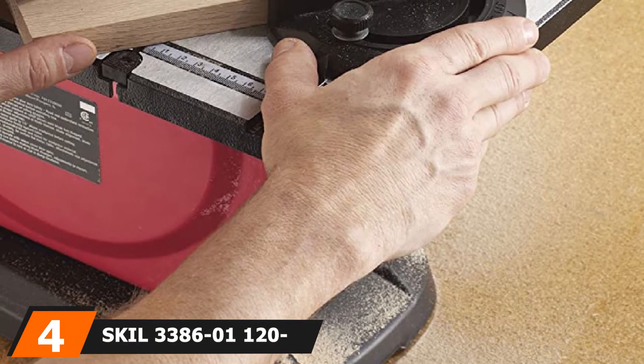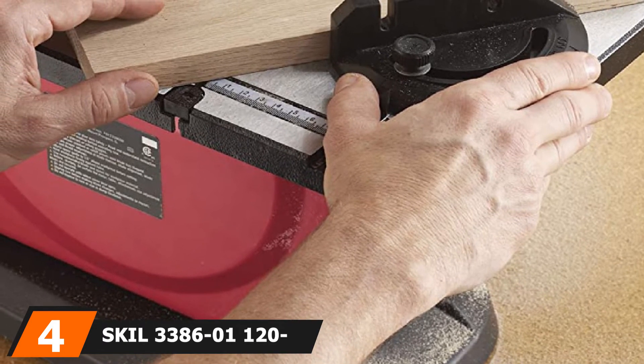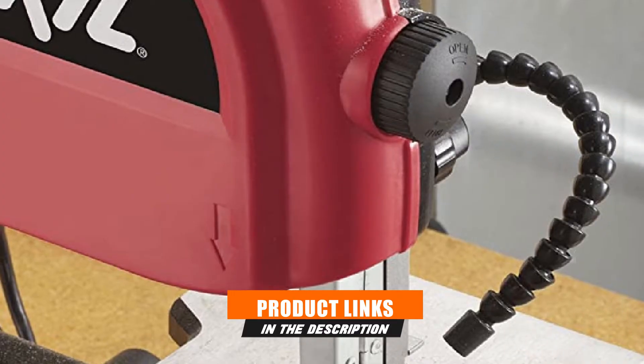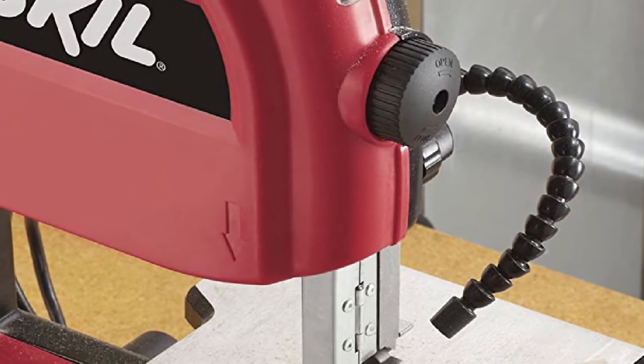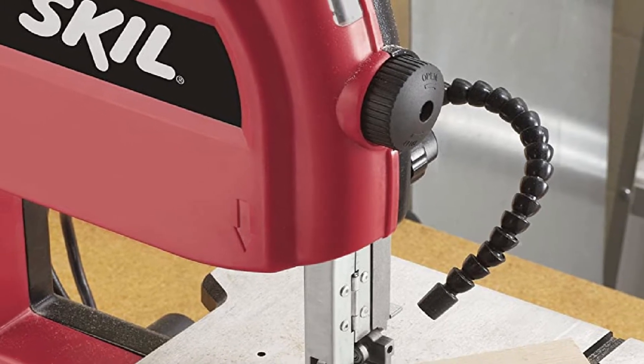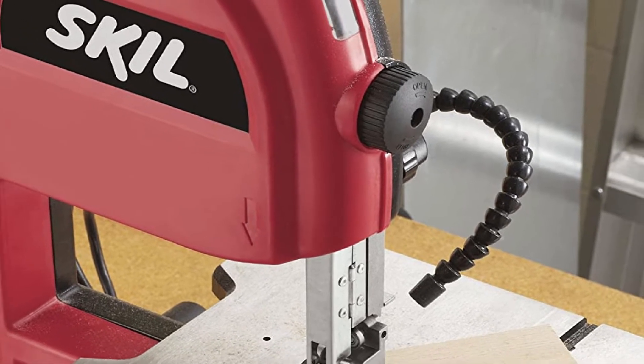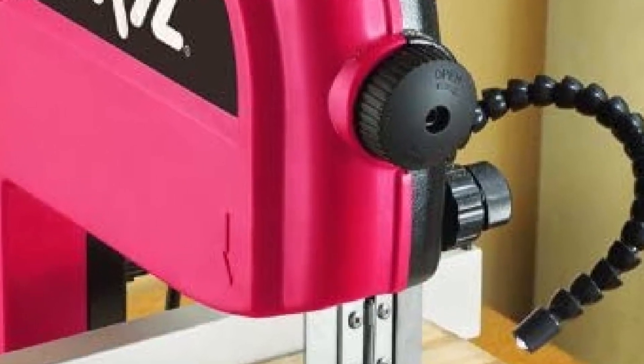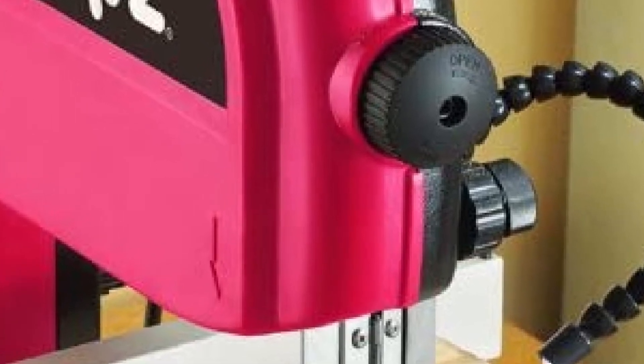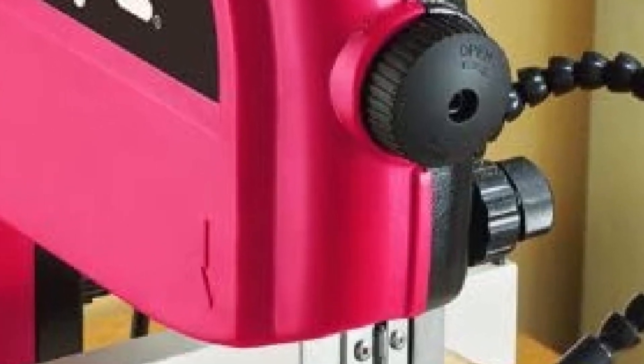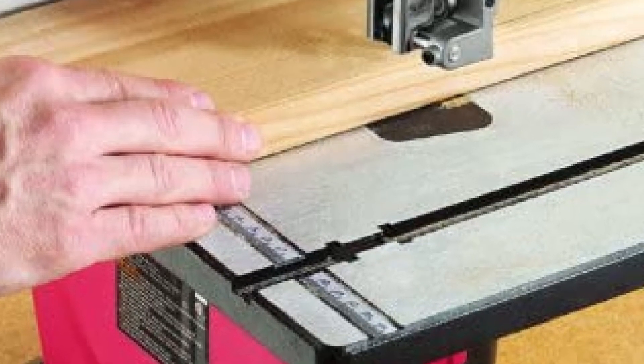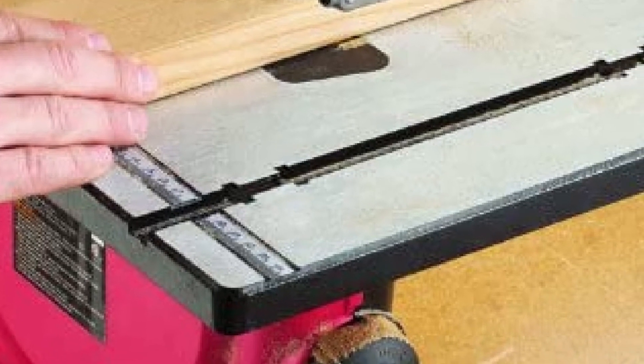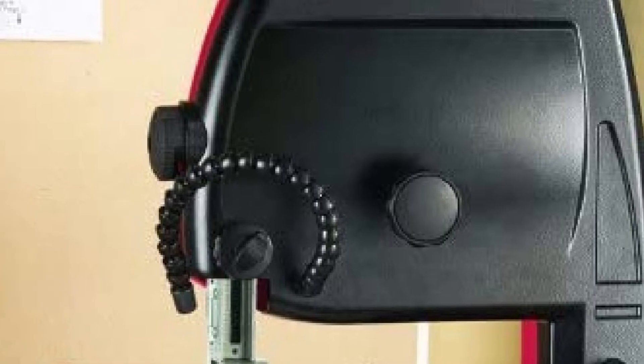Next at number 4, we have Skil 3386-01 120-volt 9-inch bandsaw. It remains the best woodworking bandsaw, especially if you compare its features and the price. The machine offers up to a 2.5-amp motor that powers a 9-inch band, giving an effective cutting surface for your various woodcrafts. Moreover, it has a very reliable rip fence. You don't have to worry about dust as long as you have this machine. It comes with a 1.5-inch dust port that plays a crucial role in ensuring that your working surface stays clean. The device has a rack and pinion table that makes the adjustments faster and efficient in case you are looking to make angular cuts.